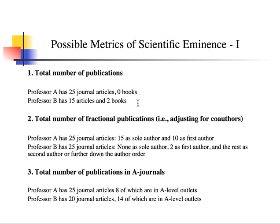One can try to come up with a more granular or accurate way of measuring publications by incorporating fractional publications or adjusting for co-authors. For example, if Professor A has published 25 journal articles, 15 of which are as sole author and 10 as first author on multi-authored papers, that means he is either the sole or first author on all 25 papers — so he is very much driving each of those publications.